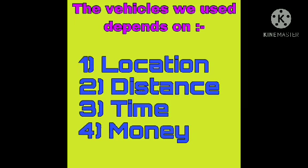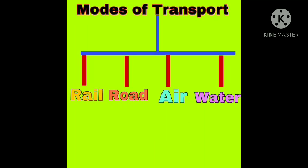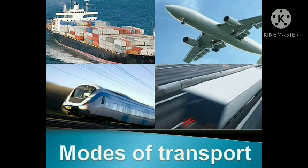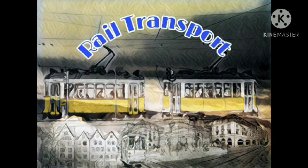We generally walk or take a cycle for nearby places, and we take a vehicle for faraway places. Sometimes we use more than one means of transport to reach a place. Now let's find out the different modes of transport: rail transport, road transport, water transport, and air transport.